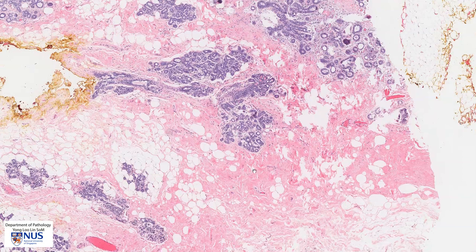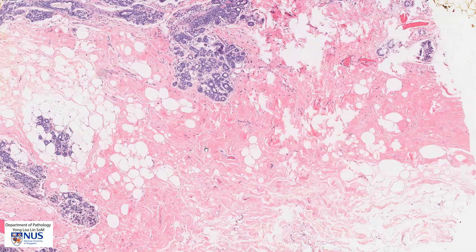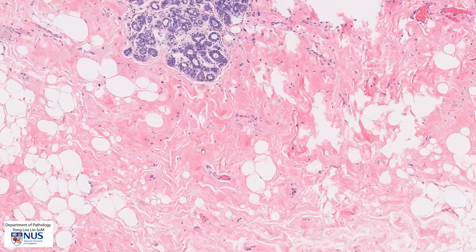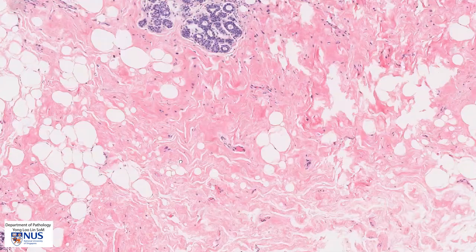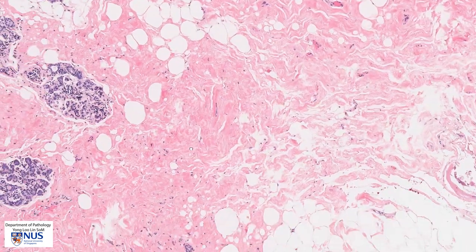Here are the areas of stromal sclerosis, which is essentially collagen, and this contributes to the firm texture of the breast on palpation.